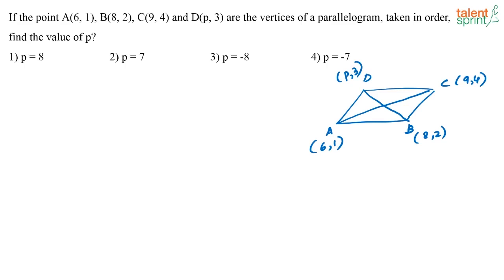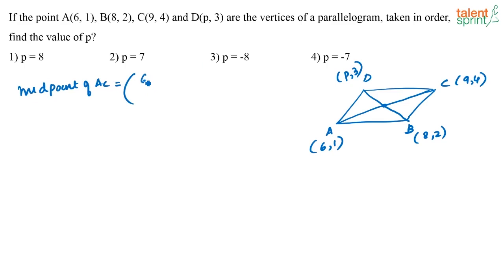What do we mean by that? The point where the diagonals bisect each other is the midpoint of AC. The place where the diagonals meet is nothing but the midpoint of both diagonals respectively. So the midpoint of AC is nothing but 6 plus 9 by 2 comma 4 plus 1 by 2. These are the coordinates for the midpoint of AC.